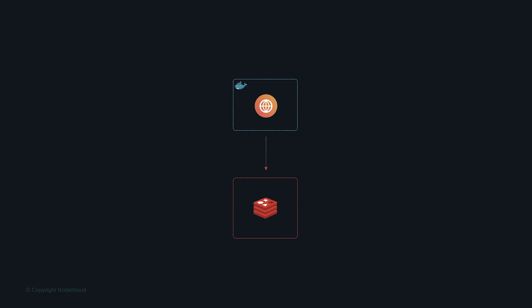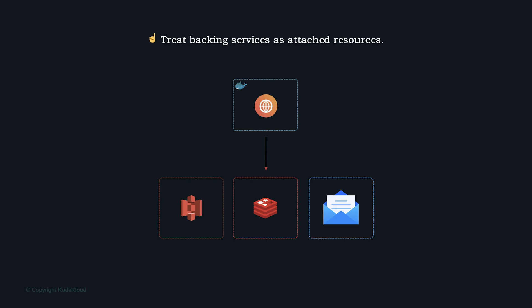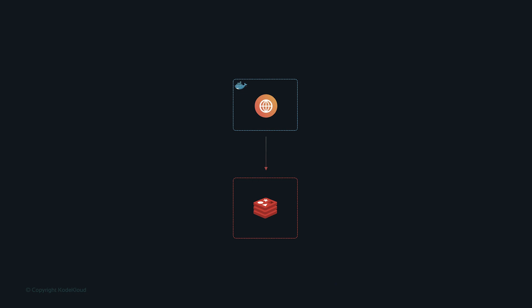Other backing services may include an SMTP service for sending emails or S3 for storing images. All of these are backing services and must be treated as attached resources. Regardless of where Redis is hosted — locally, in a cloud environment, or as a managed service — the app should work without changing any application code. You should be able to point your app to another instance and it should just work.